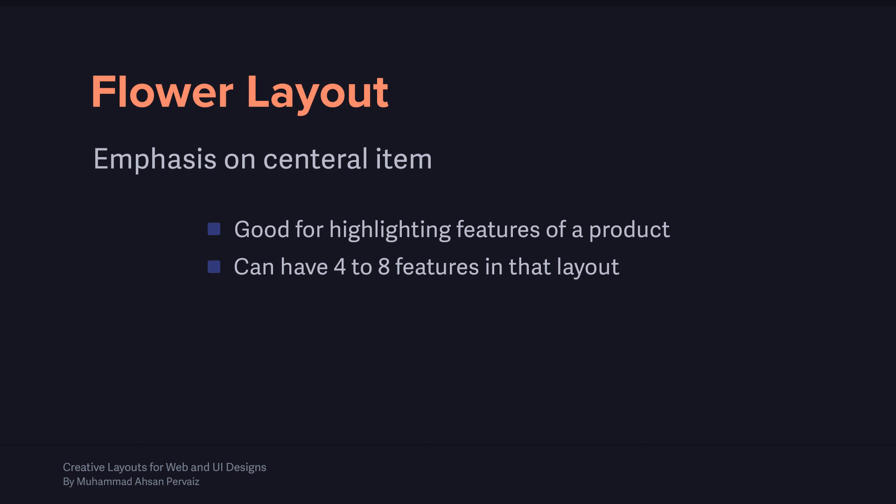Whatever the product is, it will be mostly in the middle of the layout, in the center, as the highlight. It is good for highlighting four, five, six, or seven different features of a product. Normally you must have at least four different things around the central item — four different features — to present them in this layout. I'm going to show you a few arrangements and then we are going to look at a few examples.